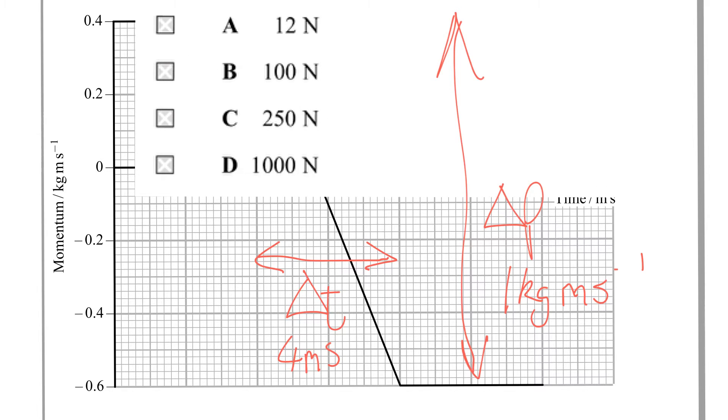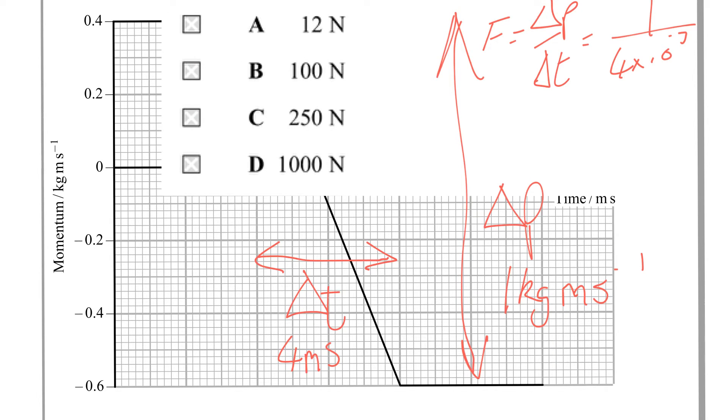So we've got one over four times ten to the minus three. So which one of these then is it? f is delta p over delta t, which is one over four milliseconds, and that comes out to be 250 newtons, which makes it answer C.